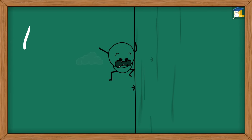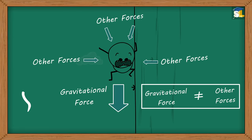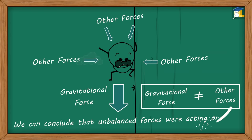Let's get back to the question. When he was falling, the gravitational force overpowered all other forces. So, the resultant force was not equal to zero, and hence, we can conclude that unbalanced forces were acting on him.